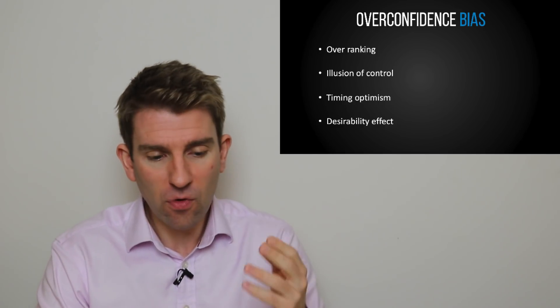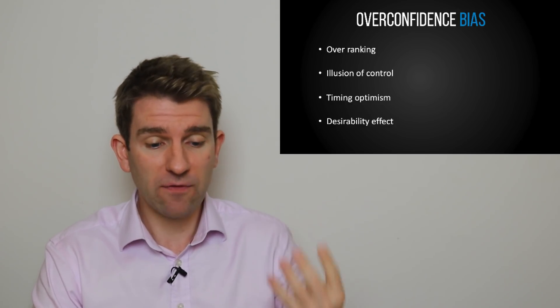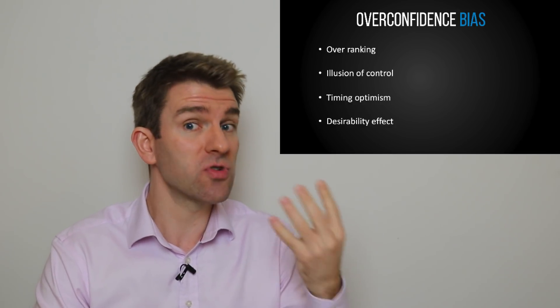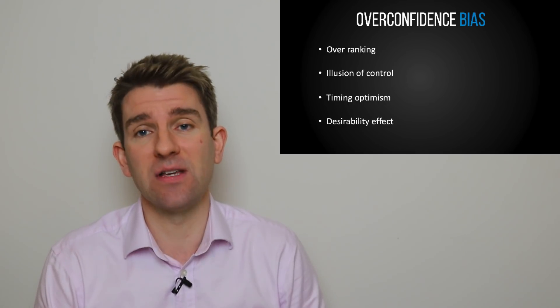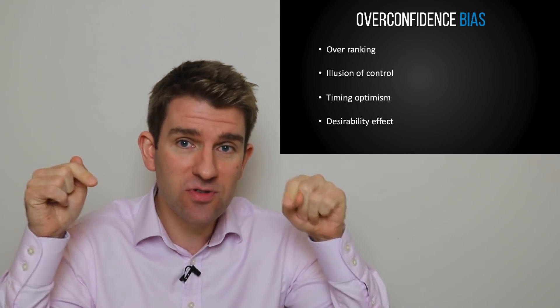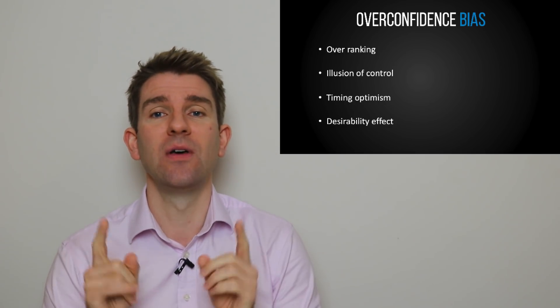So anyway, guys, those are four things, four types of overconfidence we've got to watch out for. Overranking, illusion of control, timing optimism, and the desirability effect. Let me know which one affects you the most in the comment section below, and I'll see you in the next one. Take care, bye-bye.